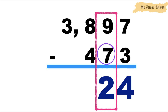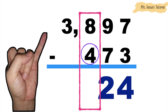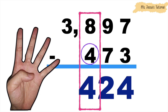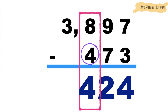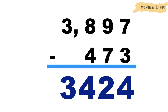Let's proceed to the hundreds place. 8 minus 4. 4 on your mind. 4, 5, 6, 7, 8. So 8 minus 4 is equal to 4. Let's proceed to the thousands place. We're going to bring down 3 since there is no more number to be subtracted. So the difference is 3,424.